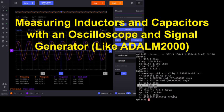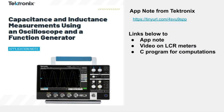This video is about a method for measuring inductors and capacitors using an oscilloscope and a signal generator. It's useful if you don't own an LCR meter, and it's interesting because the technique is related to how LCR meters work. The method is based on a Tektronix application note — I'll put a link below. I'll also include a video from Rohde & Schwartz on LCR meters, and a link to a C program that does the calculations this method requires.